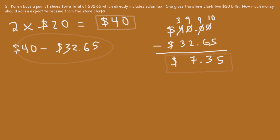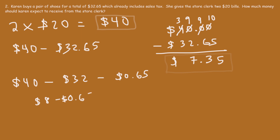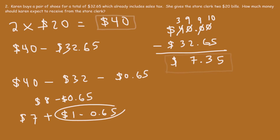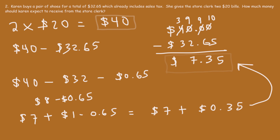You can check: 40 minus 32.65 is $7.35. For those who want to do mental math: 40 minus 32 minus 65 cents. 40 minus 32 is 8. Break 8 into $7 plus $1. Then $1 minus 65 cents — $1 is 100 cents, 100 minus 65 is 35 cents. So you get $7 plus 35 cents, which is $7.35. You can use mental math to get the same answer.